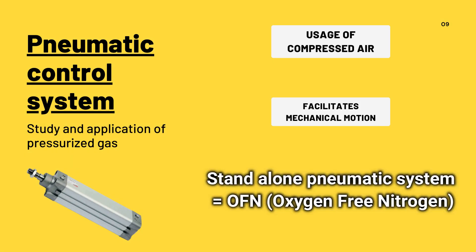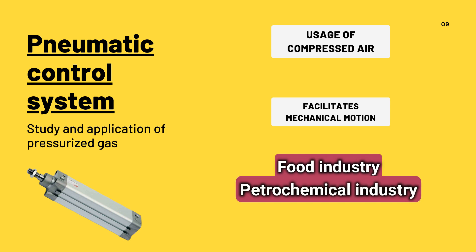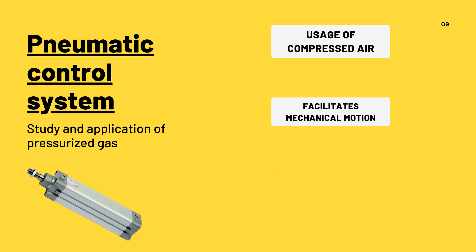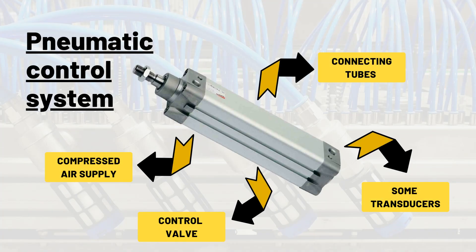Smaller sized standalone or portable pneumatic devices may rely upon cylinders containing compressed gases that can include oxygen-free nitrogen. Pneumatic systems are found in many industrial systems such as the food industry, petrochemical industry, and industrial robots. They simply require a compressed air supply, a controlled valve, connecting tubes, and transducers.